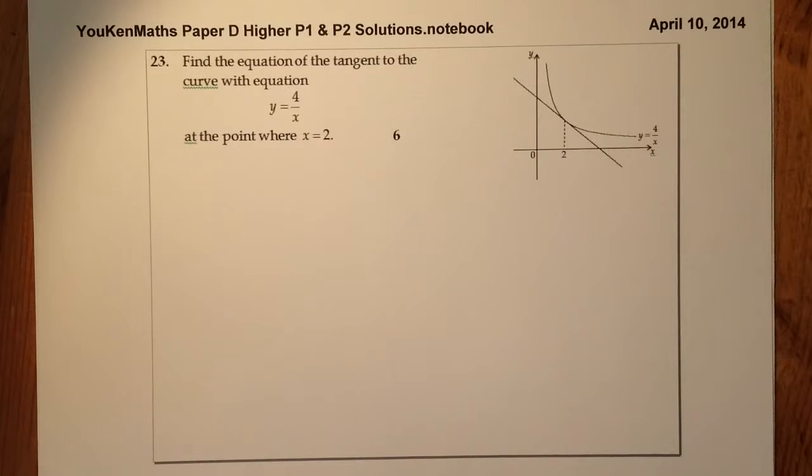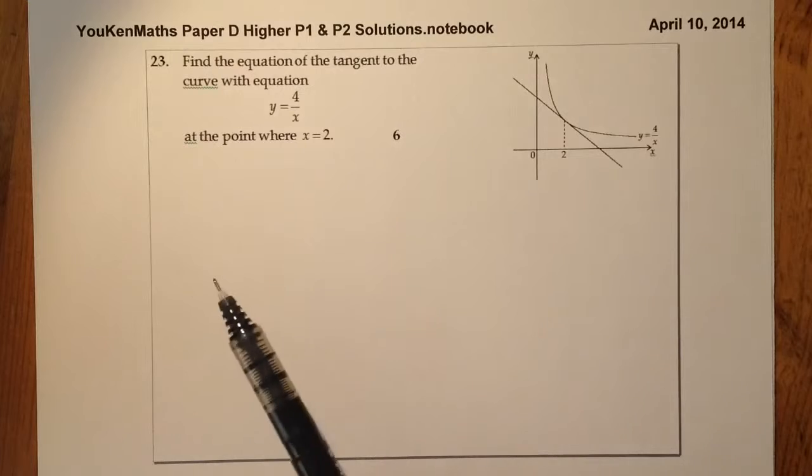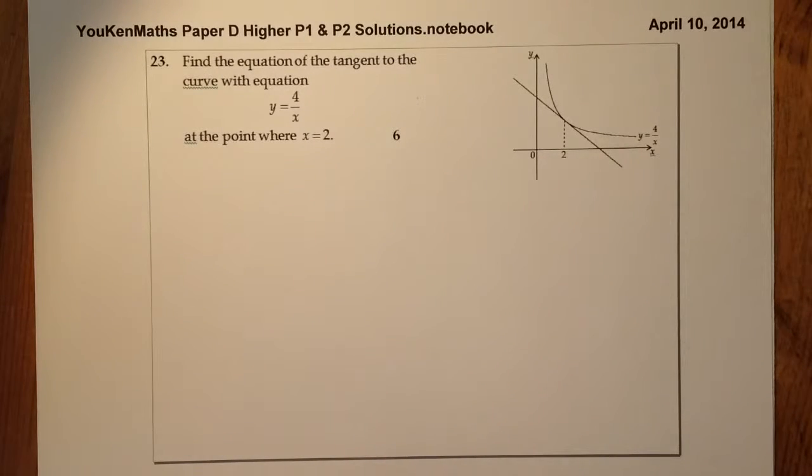This is Higher Maths, it's paper D, practice paper D, and what we're looking at is question 23 in the non-calculator paper. So what we've got here is to find the equation of the tangent to the curve with equation y is equal to 4 over x at the point where x equals 2, 6 marks to be gained here.